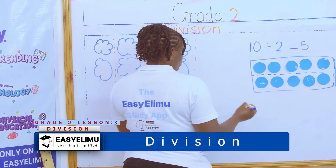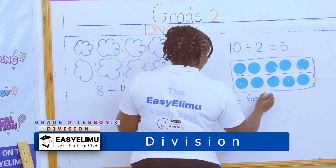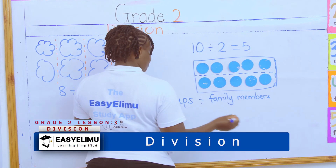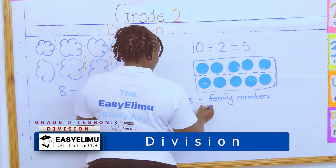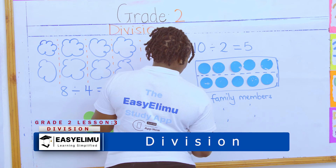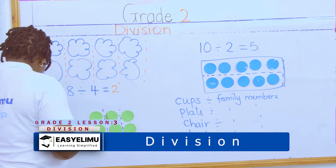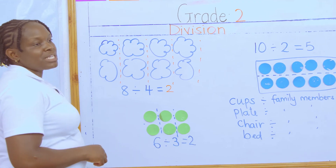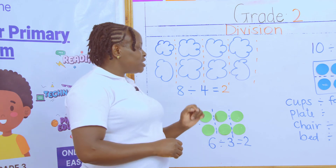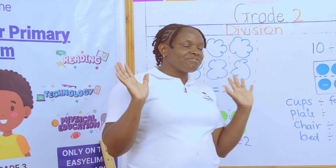Now during your free time at home, I want you to share the cups at home among the number of family members. Divide the plates among the family members, the chairs in the house among the family members, and the beds among the family members. Tomorrow when you meet, you'll tell me how many cups are in your house, how many people, and when you divide, how many does each get? How many plates, chairs, beds? We'll have an exciting story because some of us will give funny stories.